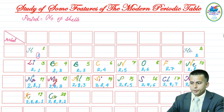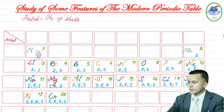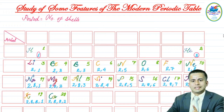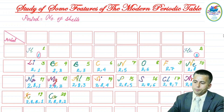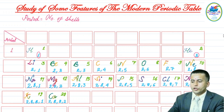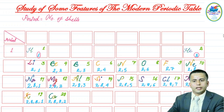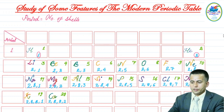Hydrogen has one K shell with one electron, and helium has one K shell with two electrons. Because both have only one shell, hydrogen and helium lie in period number one. Likewise, starting from lithium up to neon, we can see K and L shells — a total of two shells in each atom — so their period number is two.